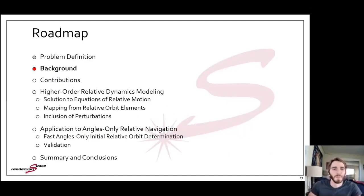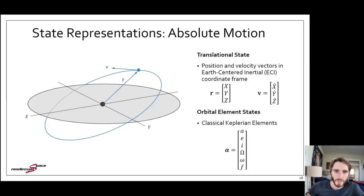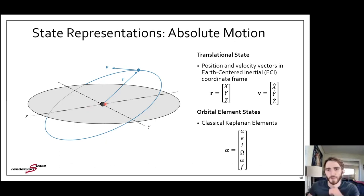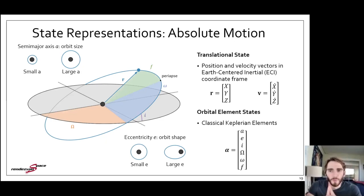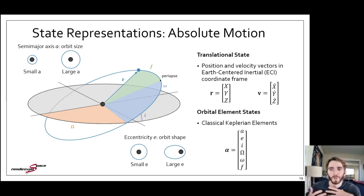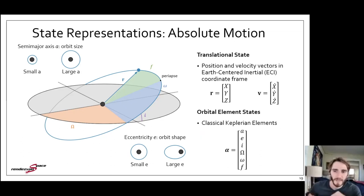It is essential to understand the relationship between the choice of state representation and the orbital motion. To describe the motion of a single spacecraft orbiting the Earth, you could use position and velocity vectors in the Earth-centered inertial reference frame. Alternatively, you could choose an orbital element state representation such as the classical Keplerian elements. The semi-major axis and eccentricity characterize the orbit's size and shape; the right ascension, inclination, and argument of perigee characterize its orientation; and the true anomaly describes the spacecraft's position on its orbit.